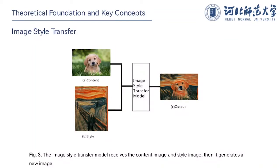Image style transfer is a hot research direction in the field of computer vision. It keeps the image content and renders its color and texture extracted from a style image. In recent years, many new algorithms can perform image style transfer. In this paper, we choose the classical algorithm proposed by Gatys.